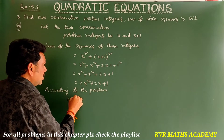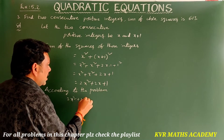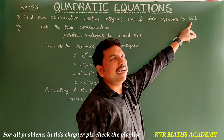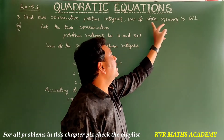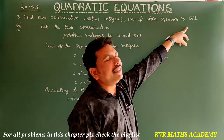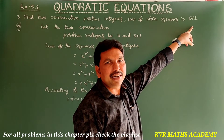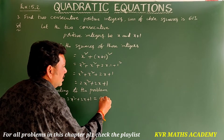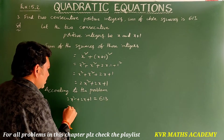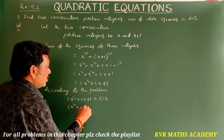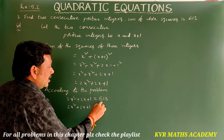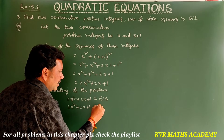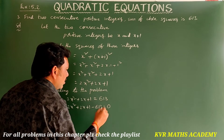According to the problem, 2x² plus 2x plus 1 equals 613, since the sum of squares is 613. Transferring 613 to the other side: 2x² plus 2x plus 1 minus 613 equals 0, so 2x² plus 2x minus 612 equals 0.